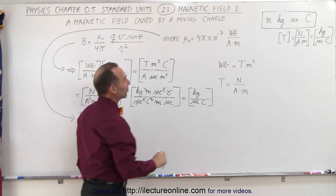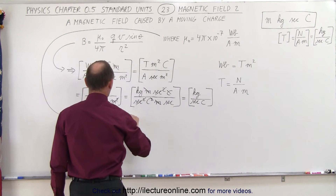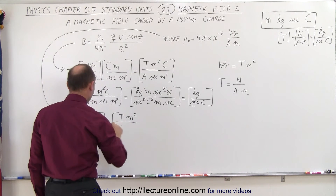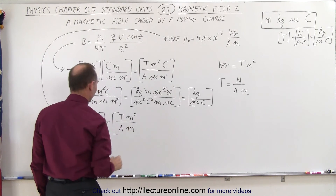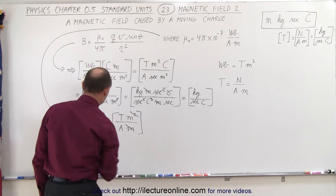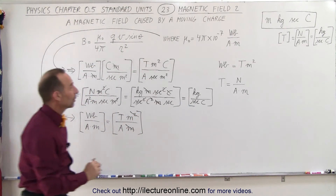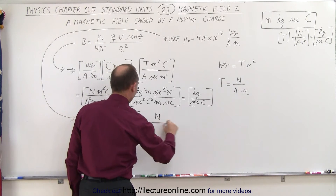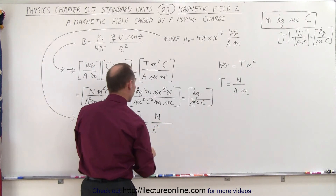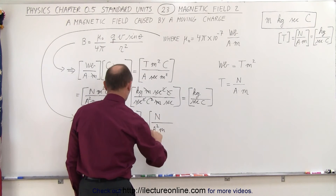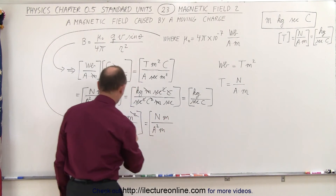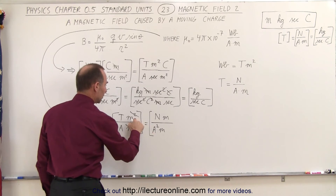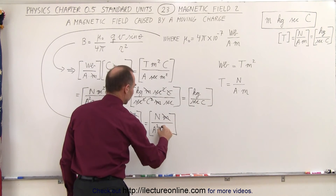Weber was defined as Tesla times meters squared, and we have amps times meters in the denominator, so the meters squared and this meter cancel out. Tesla can be written as newtons per amp times meter — that's why I didn't want to simplify amps yet. So Tesla is newtons divided by amps, that becomes amps squared, times meters. We still have a meter in the numerator, so Tesla becomes newtons per amp times meter, giving us amps squared and a meter at the top. This meter cancels out that meter.